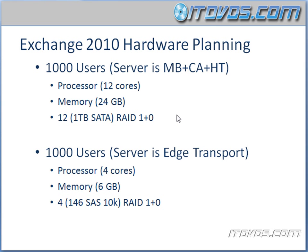We're going to talk about archiving a lot in later videos — it's a great new feature with Exchange 2010 that will hopefully get users away from using PST files. We can potentially create some cheaper, lower-performing storage. Let's say we take five 1TB SATA disks and run them in a RAID 5 configuration. In a RAID 5 configuration, you're only going to lose one disk to your RAID, so you'll have about four terabytes of usable space in theory — in reality, a little less than that.